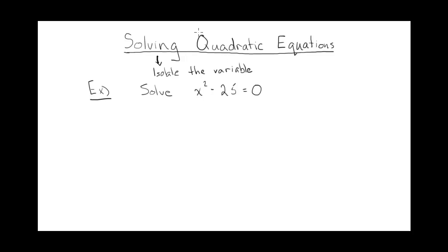What makes this a quadratic equation? A quadratic equation means that there's an exponent of 2, and that's your highest exponent. Here's an example of an equation because there's an equal sign, and it's quadratic because the exponent is 2, and we want to isolate for x.